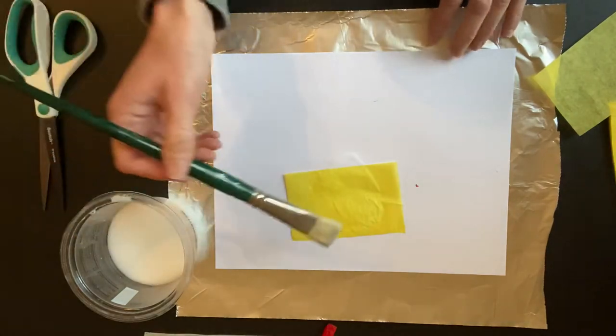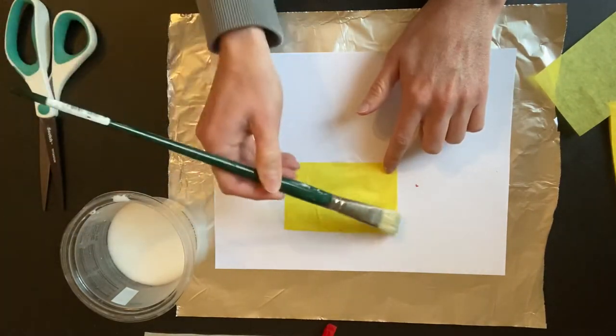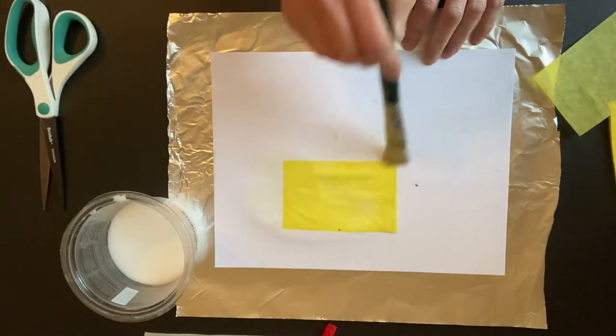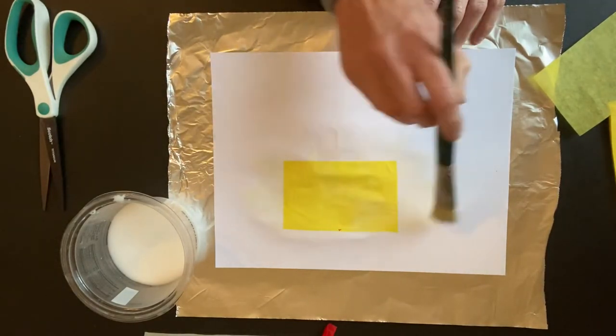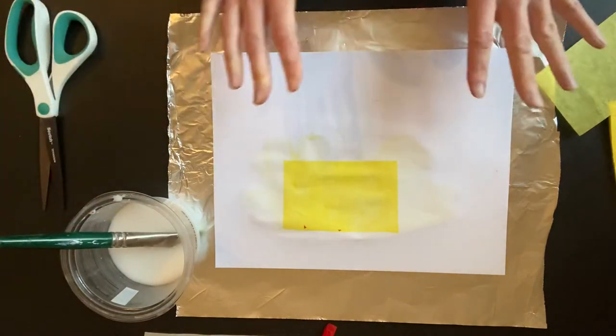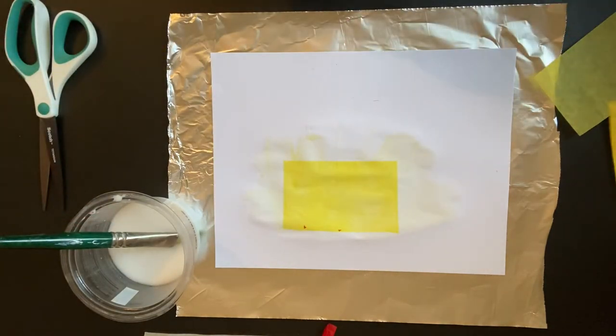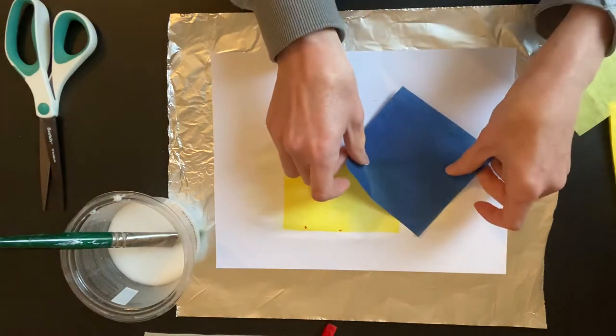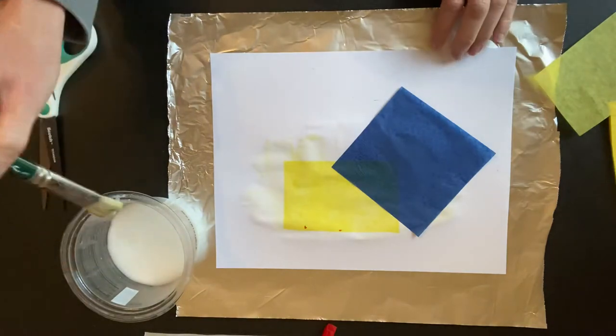Now, kids, when you do this, my first graders do this by themselves with very little help from me. What you're going to do is take the glue water and brush it over the tissue, and you want the tissue to be completely soaked. What's going to happen is the glue water is going to sink through the tissue and bond it to the paper that's behind it.